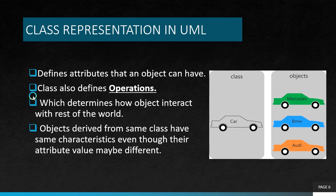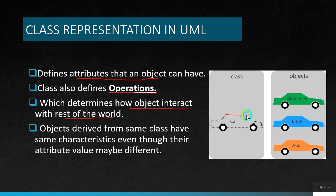Let's look about the class representation. So class defines the attributes that an object can have, and it also defines the operations. Operations are nothing but how the object interacts with the rest of the world. So here we have a class car and it has objects like Mercedes, BMW, Audi. These objects have the same characteristics of the class, but their attribute values might be different. Like color is an attribute — every object has an attribute called color, but the color of Mercedes is green, here is blue, here is orange. So the attribute value might be different but it has the same characteristics.